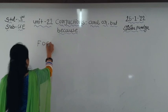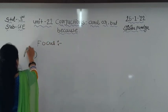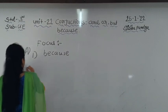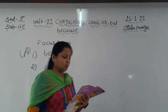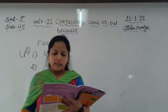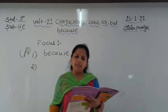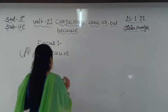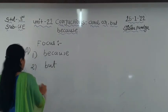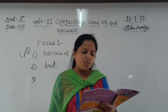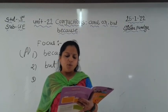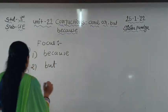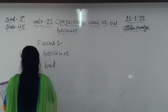Sentence 2: 'This movie is interesting, ___ it is very long.' Options: or, and, but. Answer: but. 'This movie is interesting but it is very long.' Sentence 3: 'I picked up my books ___ put them in my bag.' Options: or, and. Answer: and. 'I picked up my books and put them in my bag.'